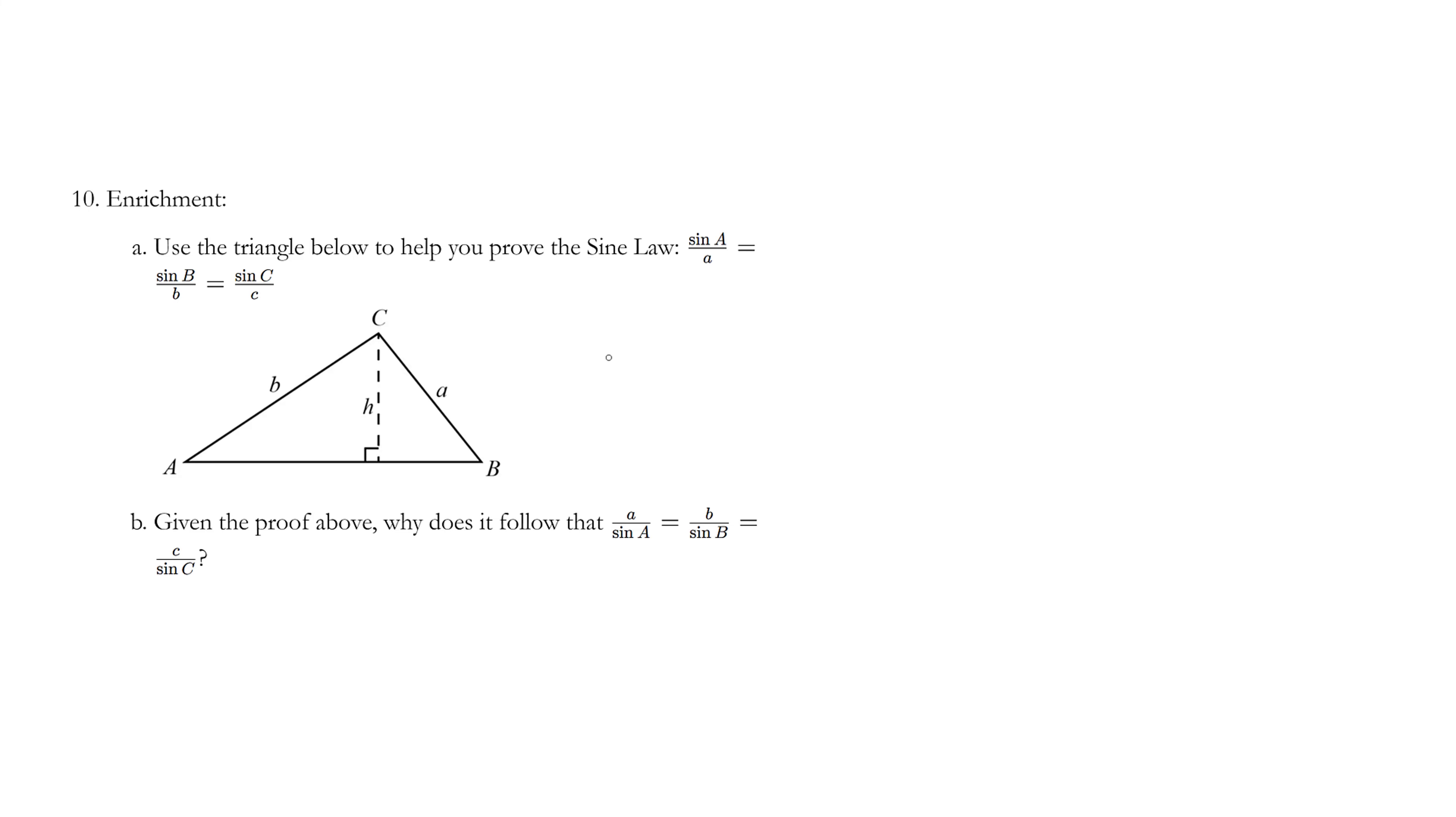So there's this famous law in math called the sine law, and we're going to use right angle trigonometry to prove that sine A over A is equal to sine B over B, which is equal to sine C over C.